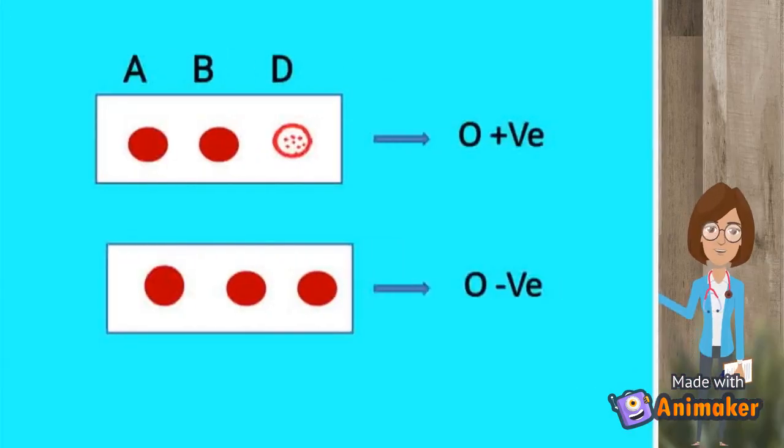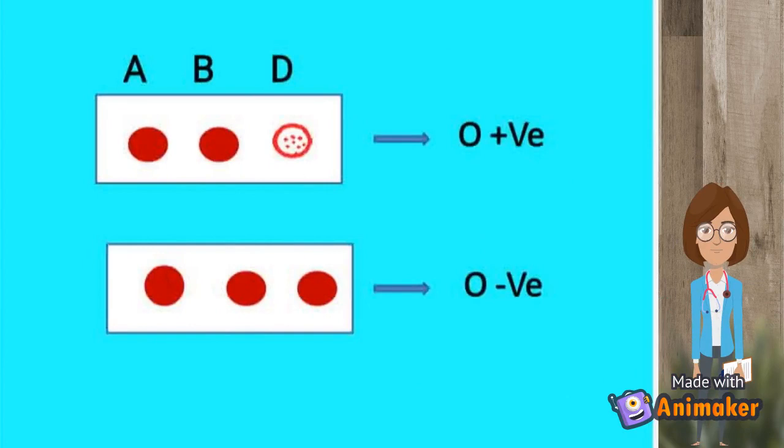In this, the first slide shows clumping only in D, no clumping in A and B, therefore it is O positive. In the below slide, clumping is not observed in all three, thus it is O negative.